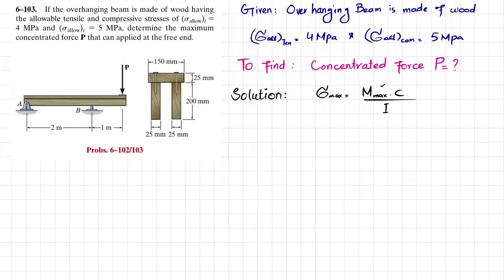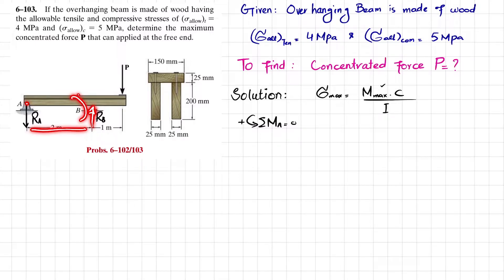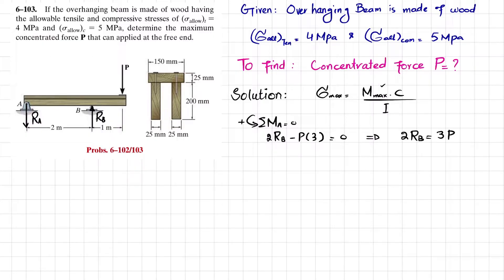First step: remove the reaction supports at point A and point B as discussed in problem 6-102. The reaction forces are R_B and R_A. Taking the sum of all moments about point A equal to zero and taking counterclockwise moment as positive: R_B times 2 minus P times 3 equals zero, so 2R_B equals 3P, giving R_B equal to 3/2 P, which is 1.5P.